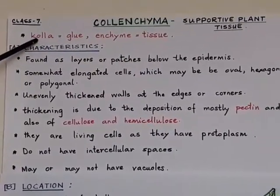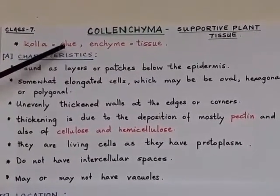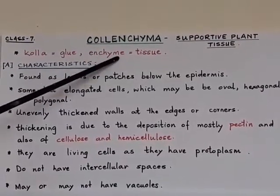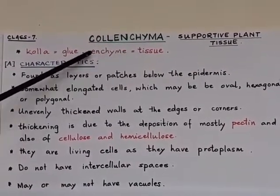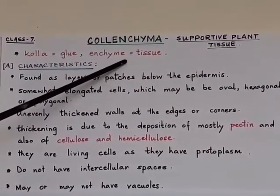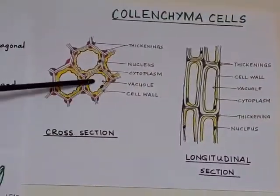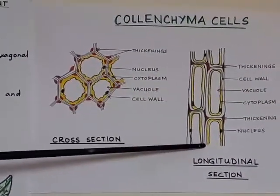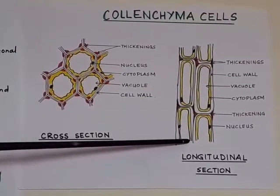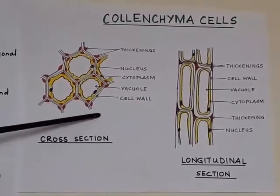In Greek, 'kola' means glue, that means something that helps in sticking, and 'enchyme' means tissue. Therefore, the name given is colenchyma. As you can see in the diagram, this is the longitudinal section of colenchyma cells and this is the cross section.